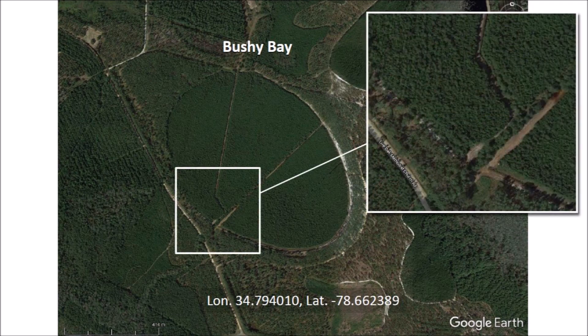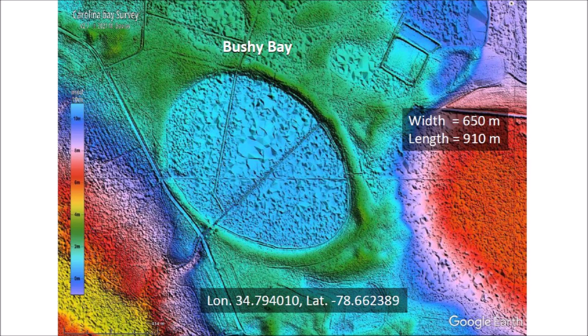At higher magnification, we can see that there are dirt roads adjacent to the drainage ditches in the middle of a densely forested area. A LiDAR image of Bushy Bay shows clearly defined raised rims with a thickened portion on the southeast end of the bay. The drainage ditches can also be seen in the LiDAR image. The description of this video below has a link to the LiDAR image visualization tool and the Carolina Bay of the Day by Michael Davias.